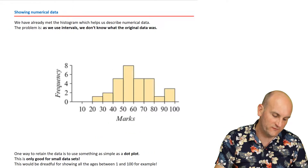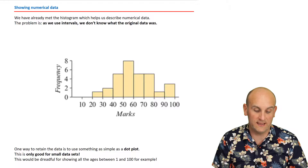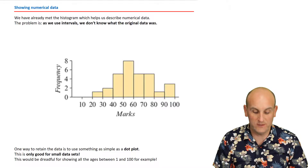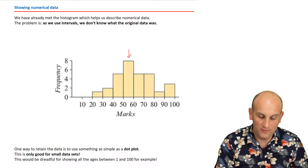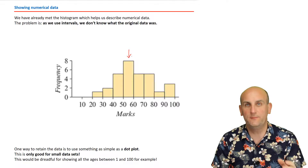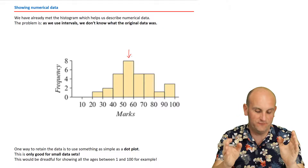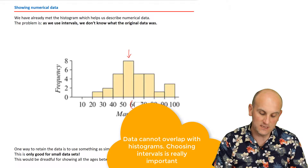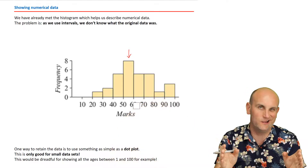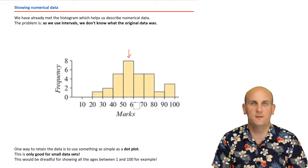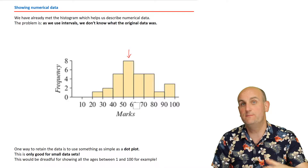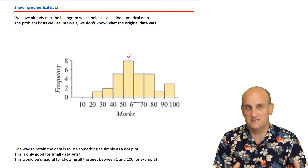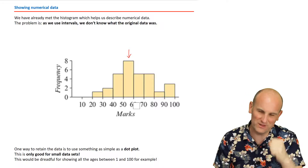We've already met the idea of a histogram, and we know that a histogram talks about numerical data. The problem is that when we use those intervals, we actually lose our original data. For example, this column — we know that all of the people in there scored somewhere between 50 and 59.999 marks, and that 8 people scored. But we just don't know if they all scored 50 or 59. That's the disadvantage with histograms — we lose that data.